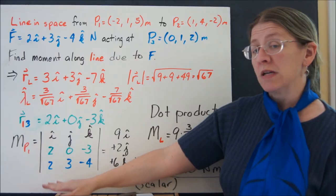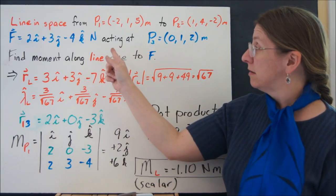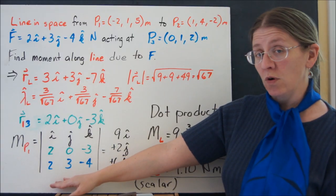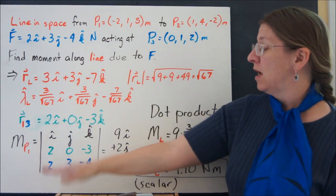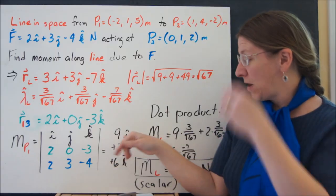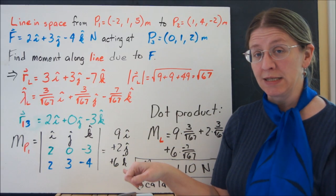Now, if I want to find the moment at P1 due to this force, I can take that cross product. That cross product gives me 9i plus 2j plus 6k.